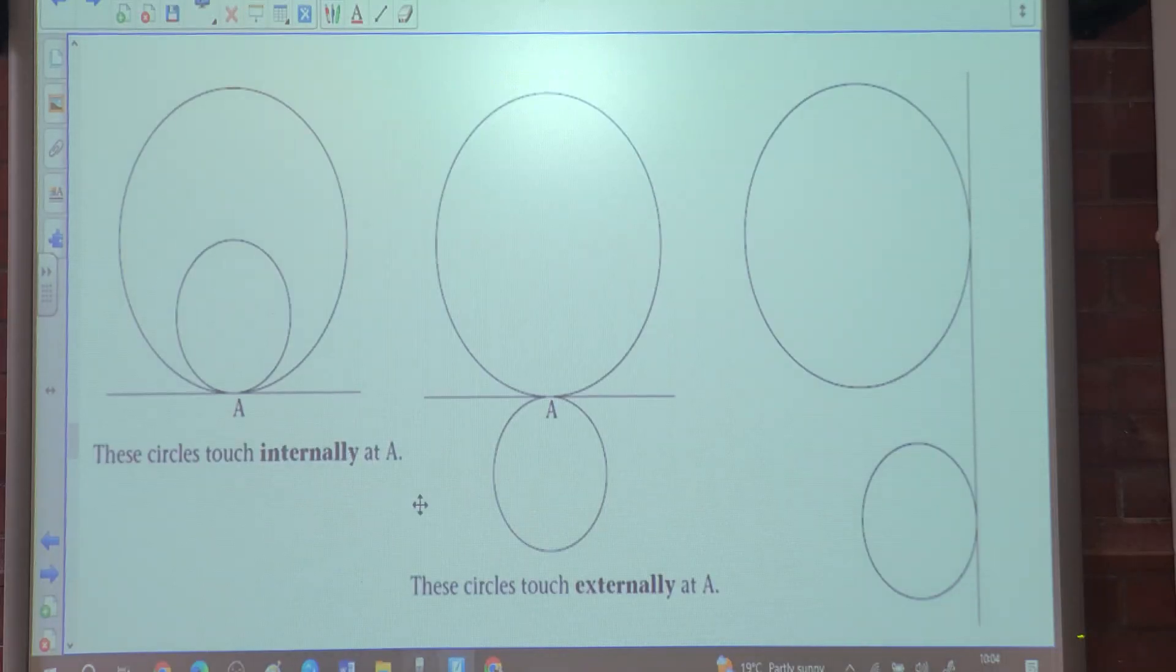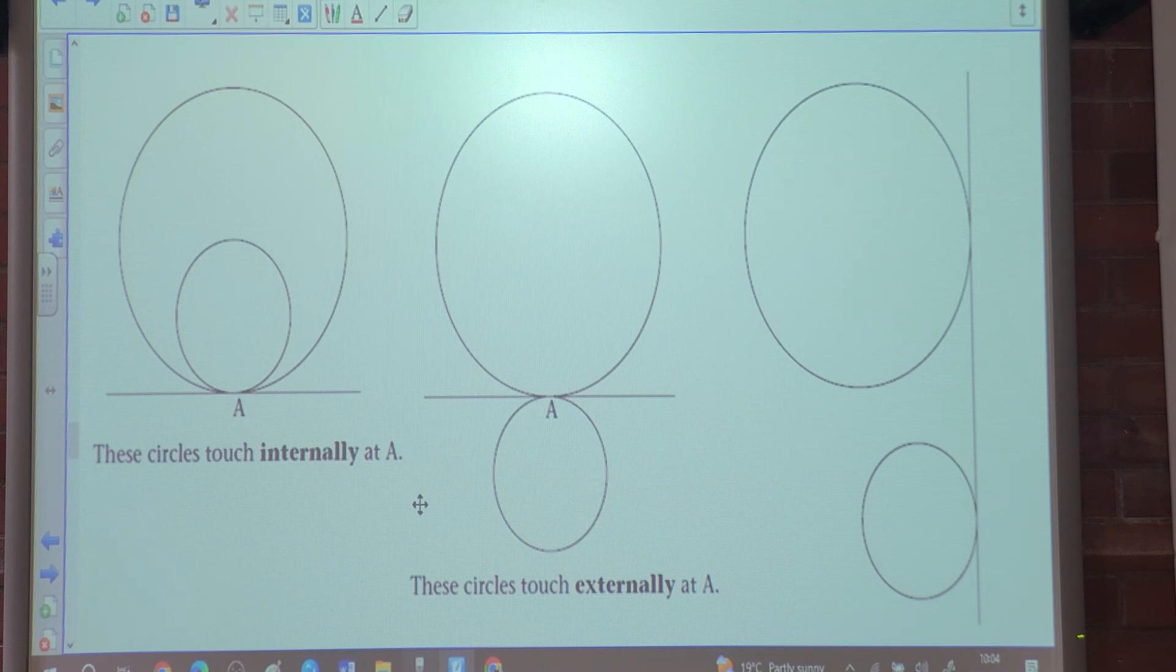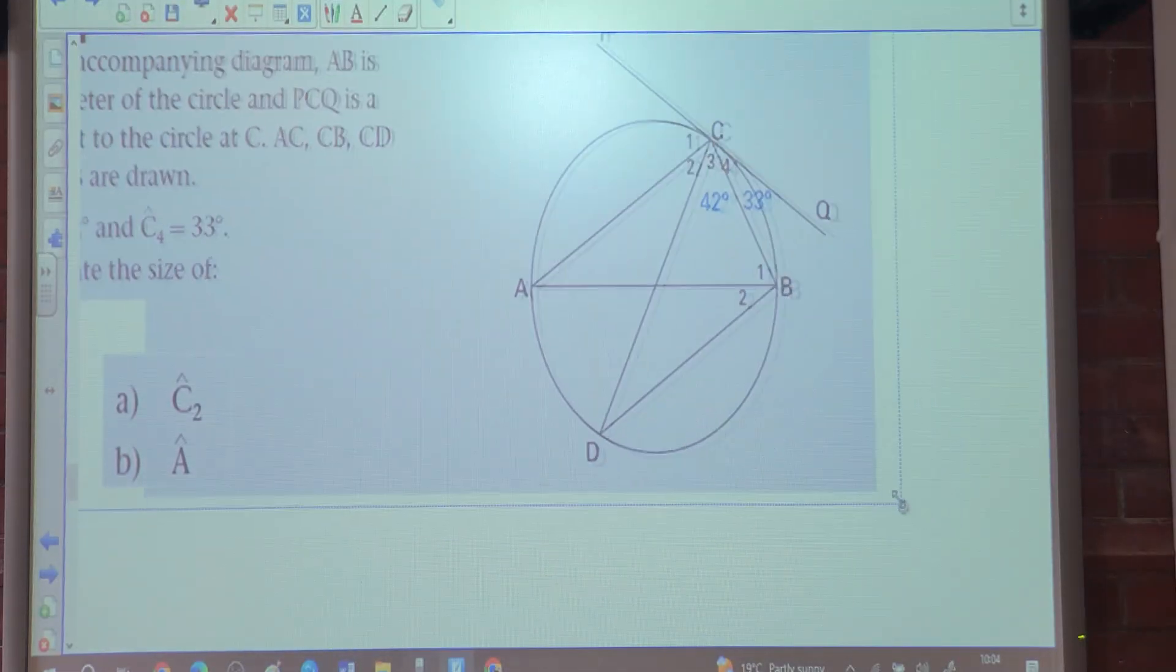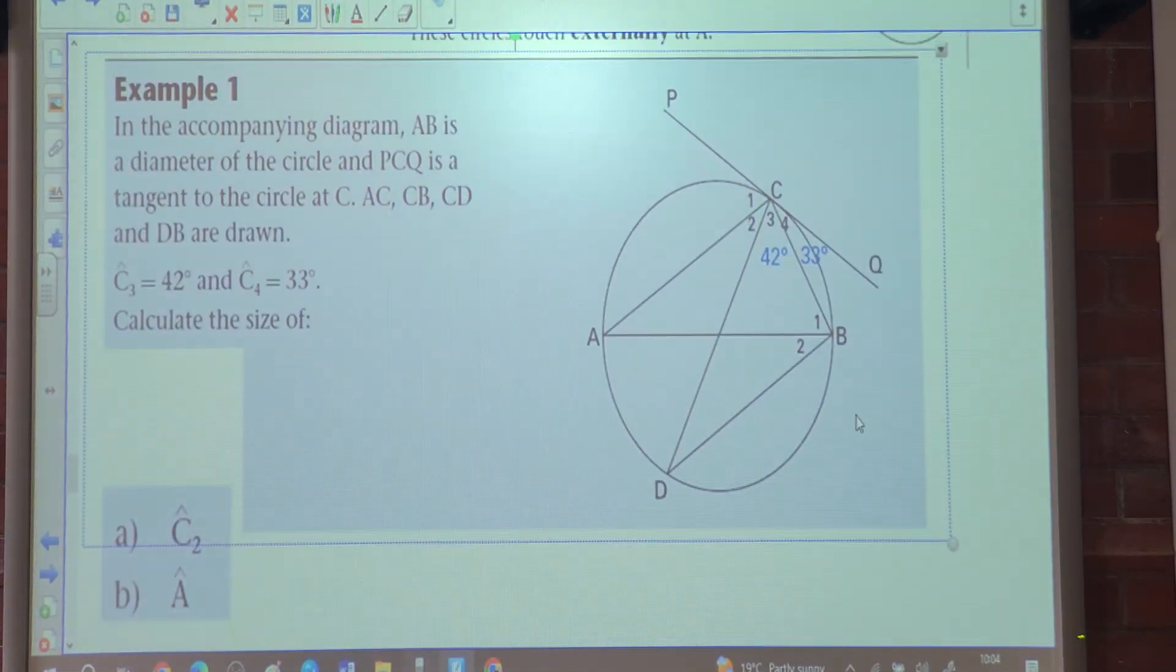So we talk about common tangents. The common tangents are drawn as follows. These circles touch internally at A. In the case of B, it touches externally at A. In the case of the third, it's going to be a common tangent. However, the two circles don't intersect, but it still can be a common tangent. Now it brings us to the business end of the deal.